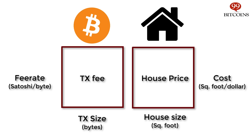Fee rate is measured in satoshis per byte. It basically means how many satoshis — the smallest unit of account in bitcoin — you are willing to pay for every byte, or unit of size, of your transaction. This rate varies depending on how much the network is crowded with transactions, much like the cost of an apartment varies depending on the demand for living space in the area. There are several websites that list the estimated fee rate in order to get your transaction included into the next block.